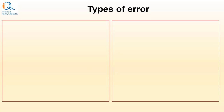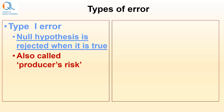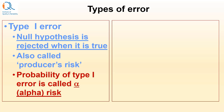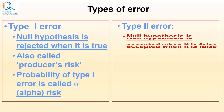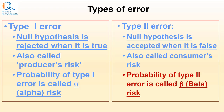In hypothesis testing, we need to accept certain types of risks or errors. Type 1 error occurs when the null hypothesis is rejected when it is actually true — also called producer's risk. Probability of Type 1 error is called alpha risk. Type 2 error occurs when the null hypothesis is accepted when it is actually false — also called consumer's risk. Probability of Type 2 error is called beta risk. Alpha and beta risks are called producer's and consumer's risks in the context of sampling plans.